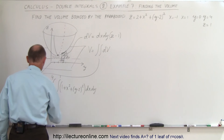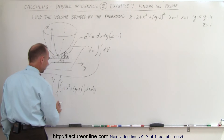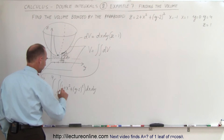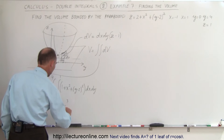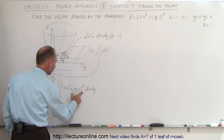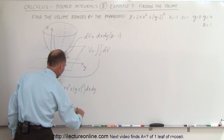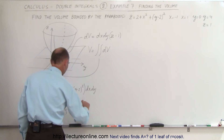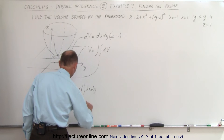Now integrating in the x direction, we get: the integral from 0 to 4 of — evaluating the inner integral — x plus x cubed over 3 plus the quantity y minus 2 squared times x, all evaluated from x equals minus 1 to x equals 1, times dy.